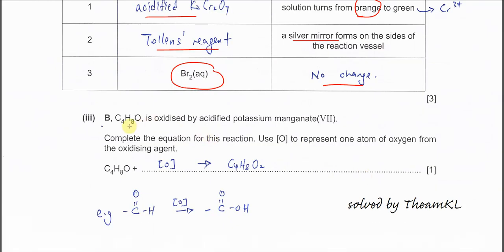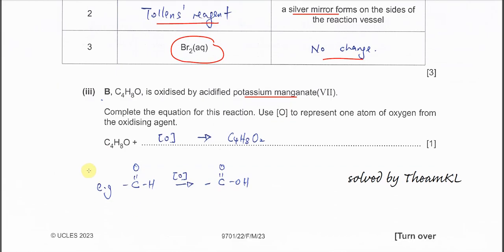B has molecular formula C4H8O and is oxidised using potassium manganate(VII). Complete the equation using [O] to represent the oxidising agent. When an aldehyde is oxidised, one oxygen is inserted between the C and H of the CHO group to form a carboxylic acid (COOH). For B (C4H8O), adding one oxygen gives the carboxylic acid C4H8O2.